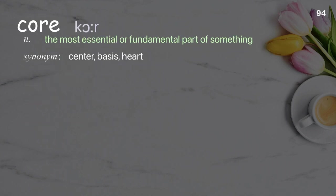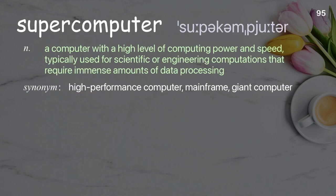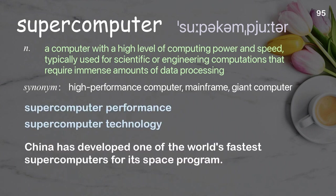Core: the most essential or fundamental part of something. Examples: the core of an apple, core business activity. These gas nebulas are merely newborn galactic cores. Supercomputer: a computer with a high level of computing power and speed, typically used for scientific or engineering computations that require immense amounts of data processing. Examples: supercomputer performance, supercomputer technology. China has developed one of the world's fastest supercomputers for its space program.